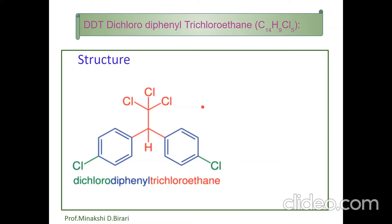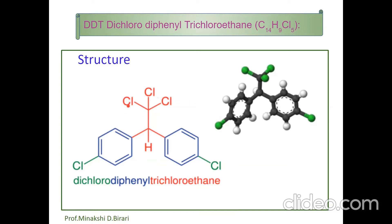The IUPAC name of DDT is 1,1,1-trichloro-2,2-bis(para-chlorophenyl)ethane, and it is an organochloride compound having molecular formula C14H9Cl5. We should remember the molecular formula, structure, and IUPAC name.